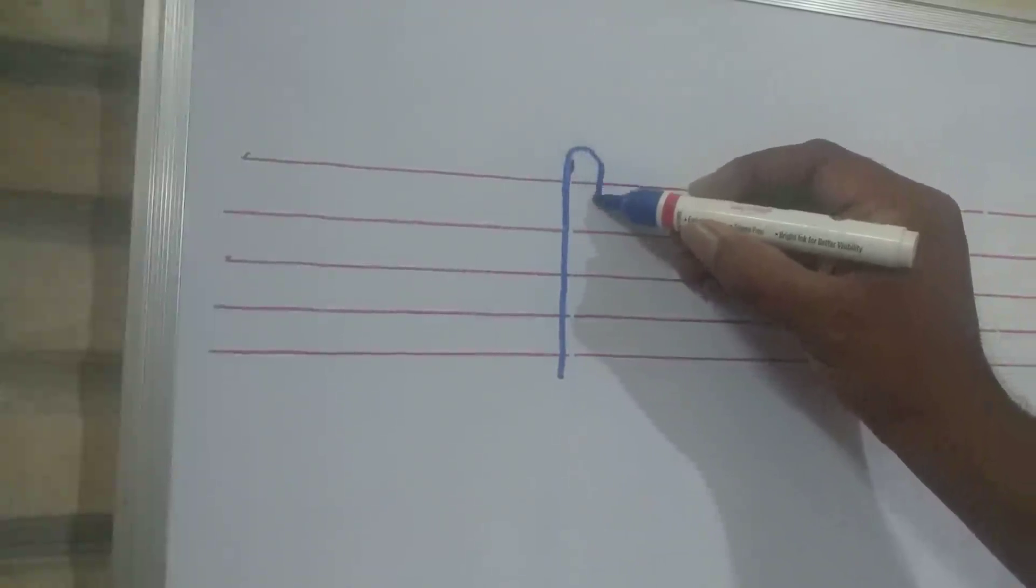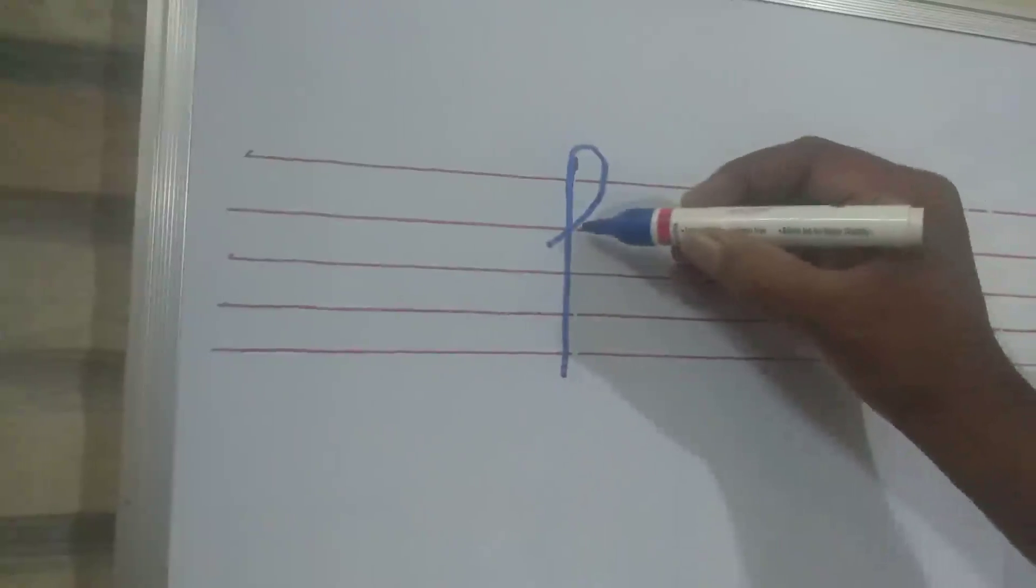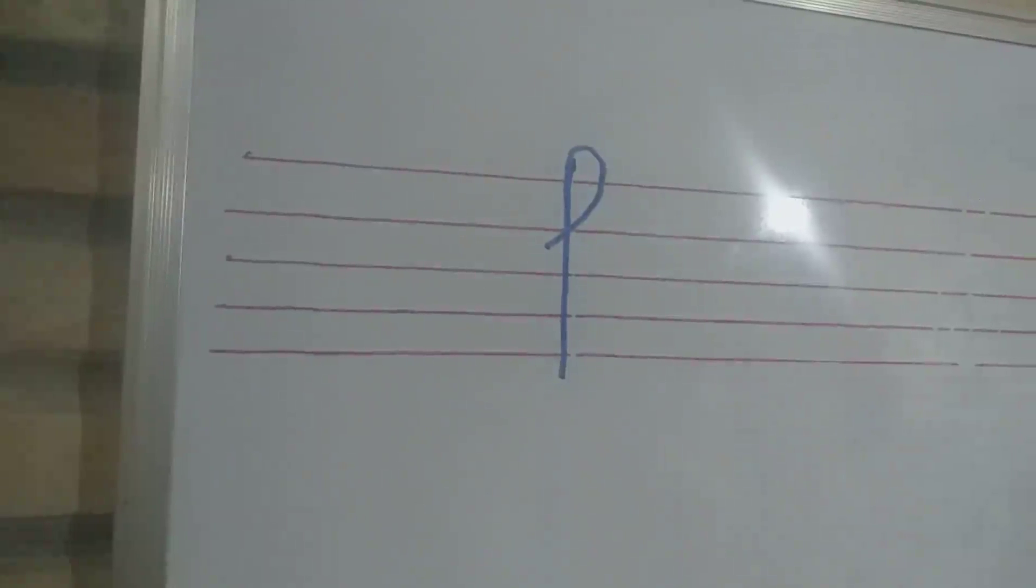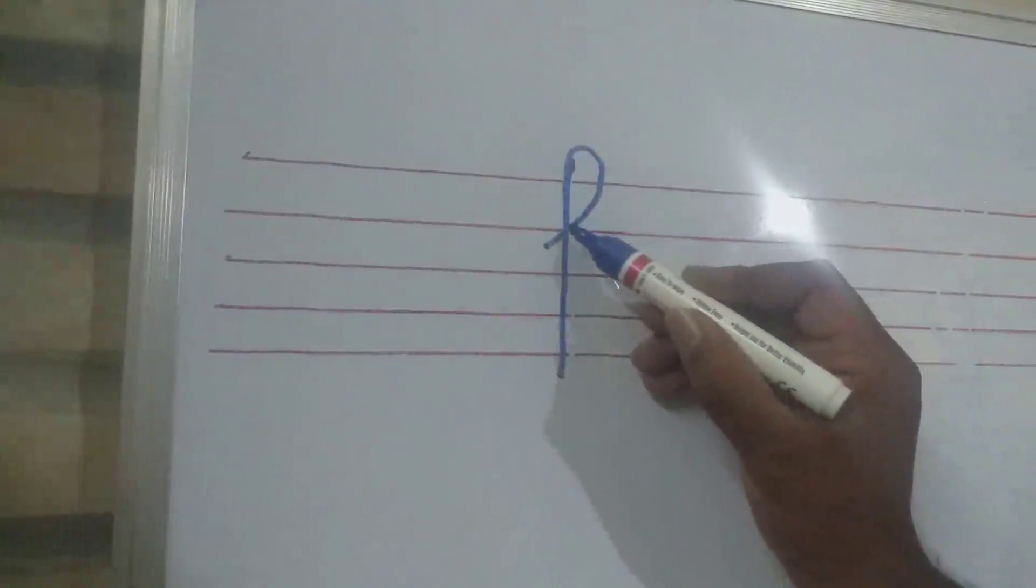And cut the fourth line at this point. You have to cut the fourth line, and then slowly come down.